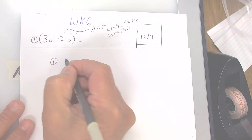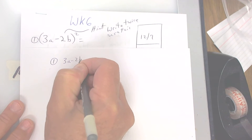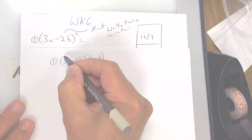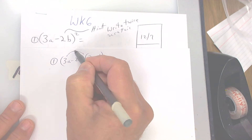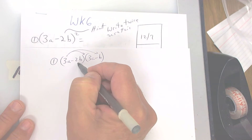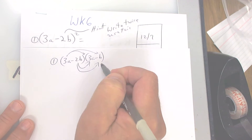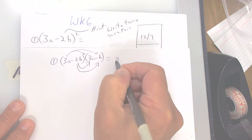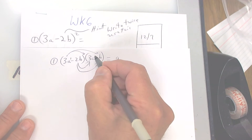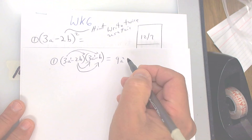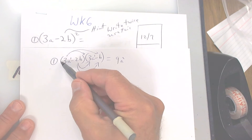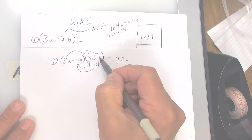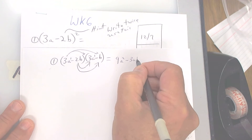You're going to put number one, write it twice, and then you're going to use FOIL. So you're going to take this one to both of these, and then this one to both of these. So it's FOIL: three times three is nine; a times a — you add your exponents — gives you a squared. Positive times a negative is a negative, so three a times b is negative three ab.